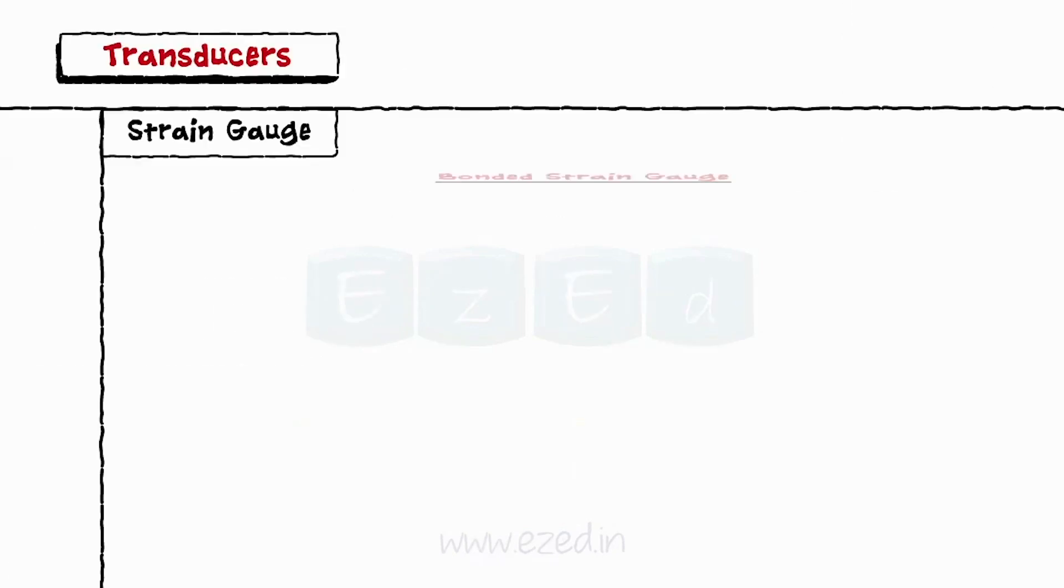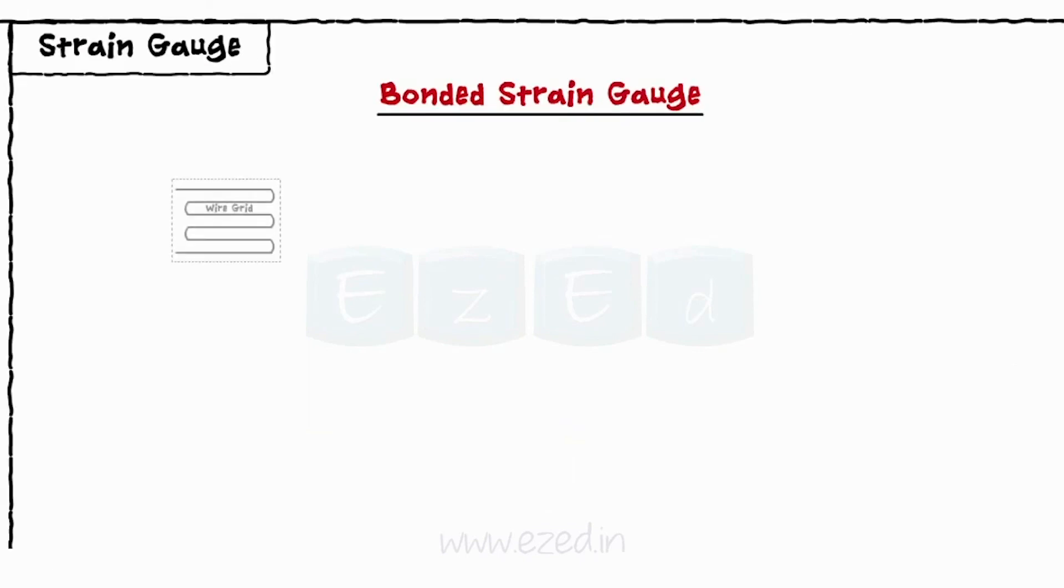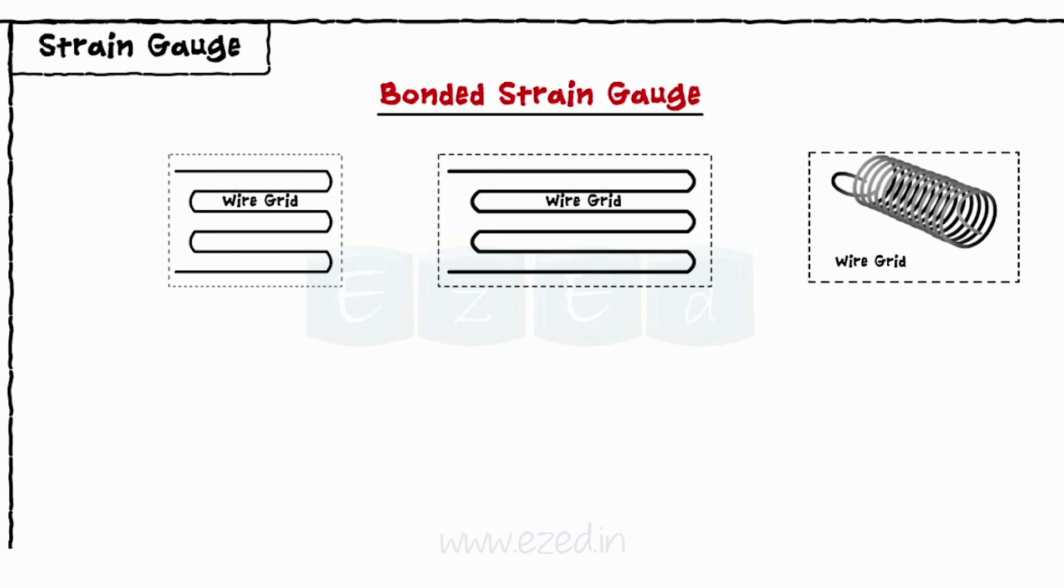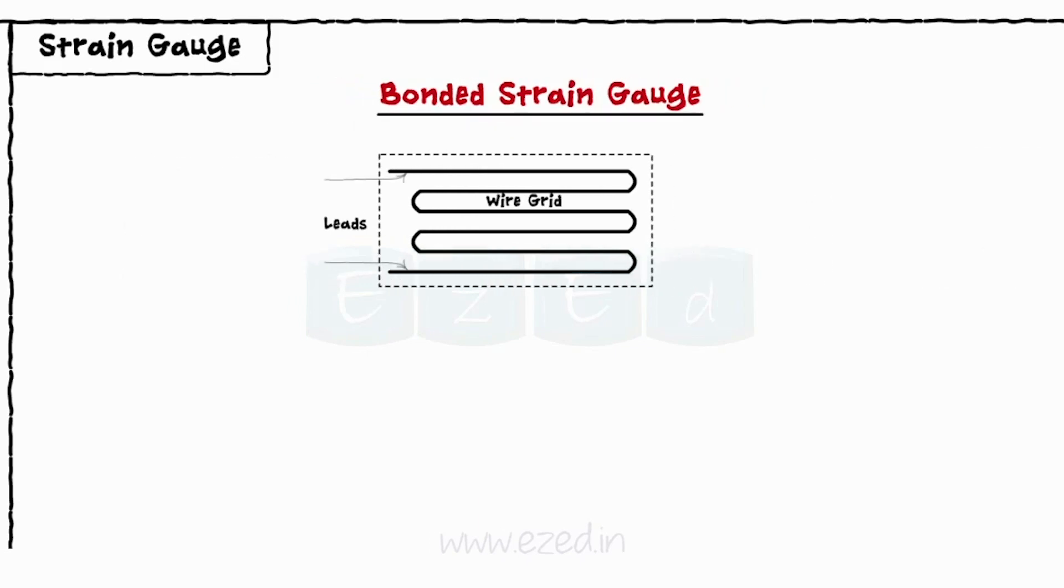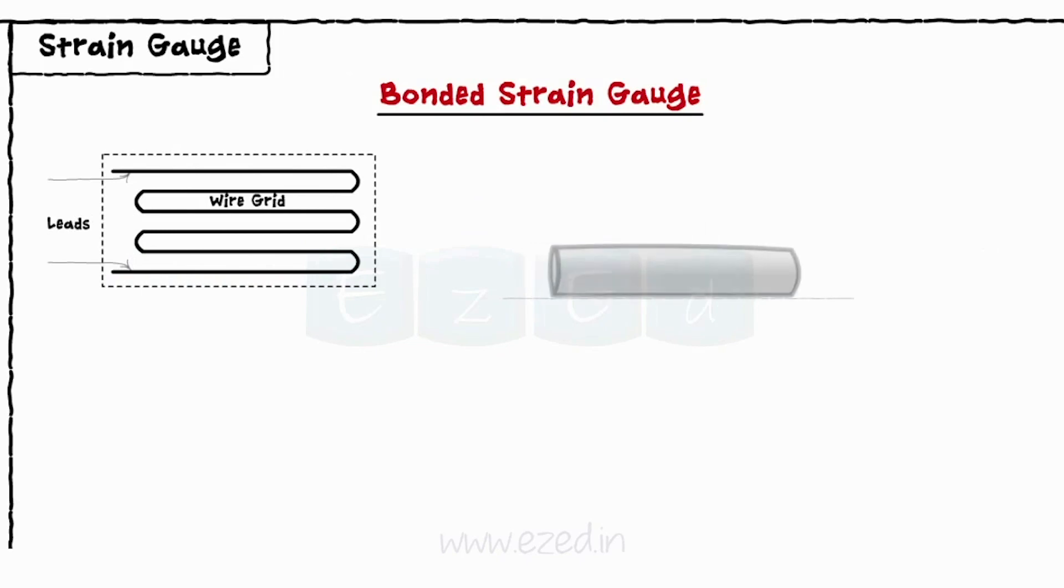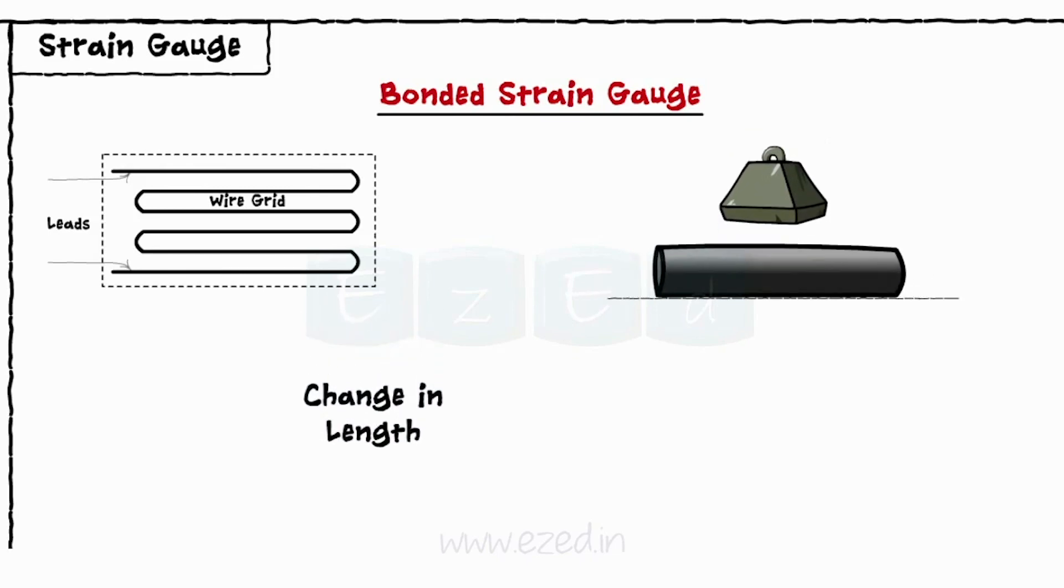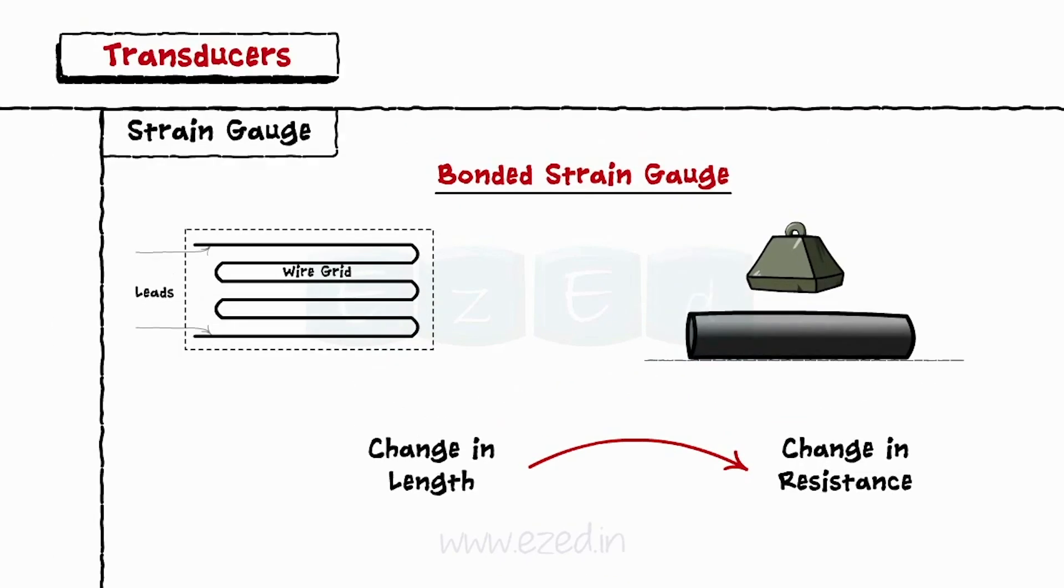These gauges are bonded with cement to the surface. The shape of the wire grid can be square, rectangular, circular etc. Bonded strain gauge has two leads for external connections which are isolated from each other. As the gauge wire changes its length, its resistance changes and corresponding change in resistance gives us the required output.